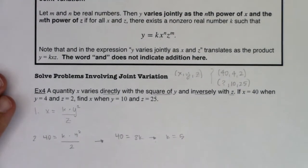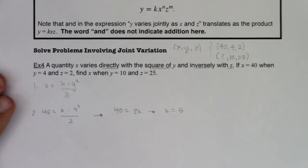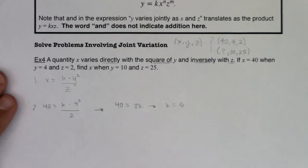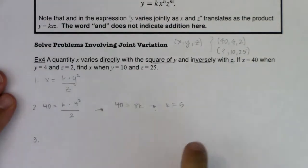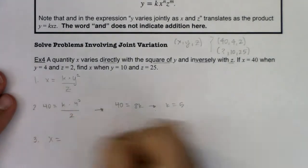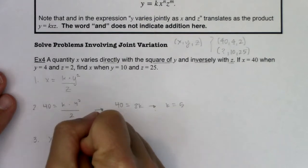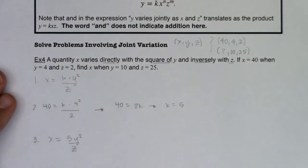Now let me scooch this up a bit. So I have some room to work. So once I'm there, I'm going to substitute this value of K back into the equation I found in step one. So as we go through this, I'm going to say X is equal to 5Y squared over Z. Alright, great.